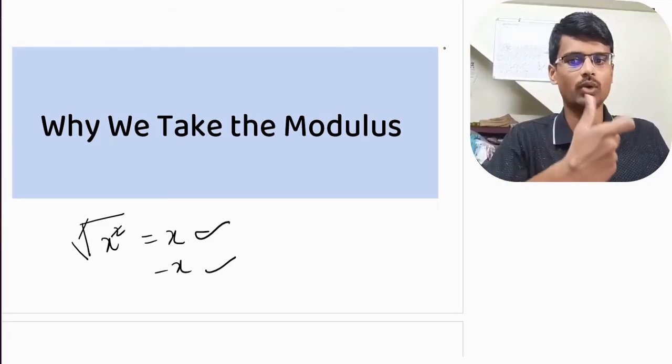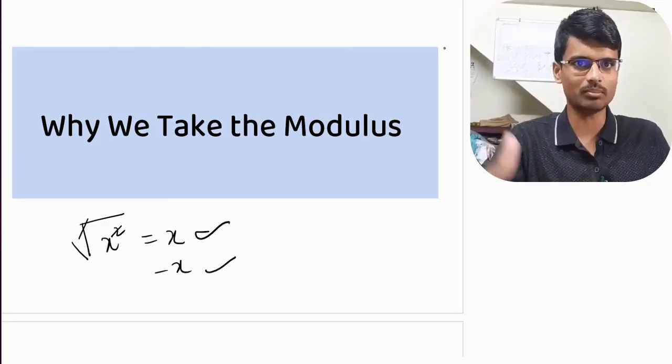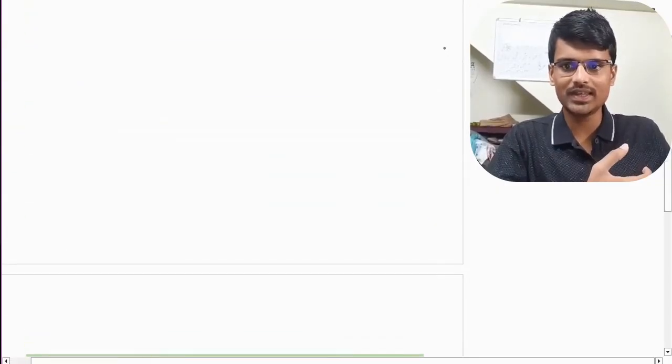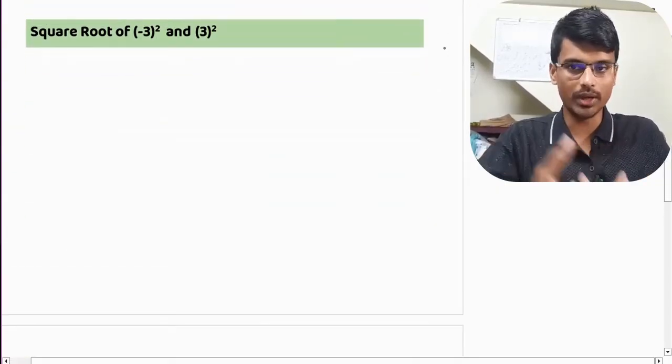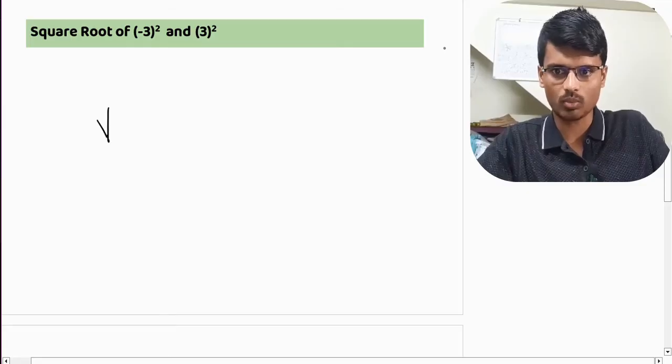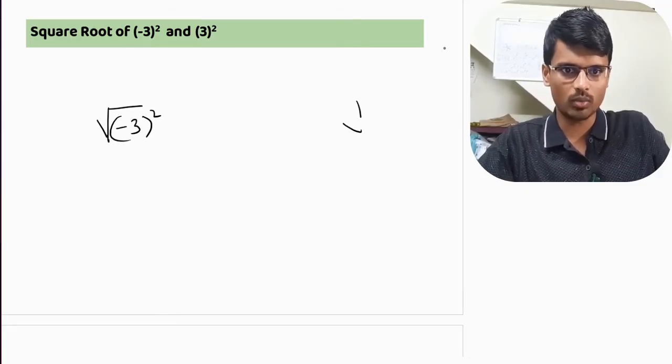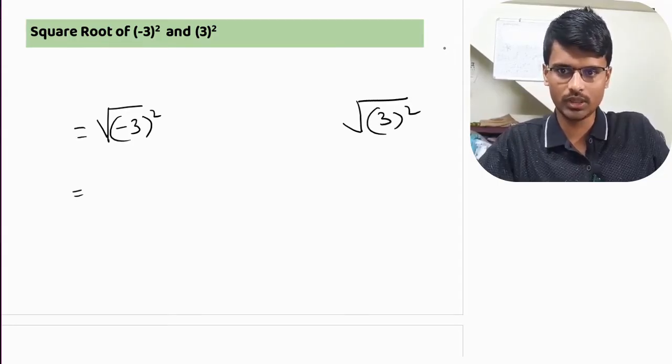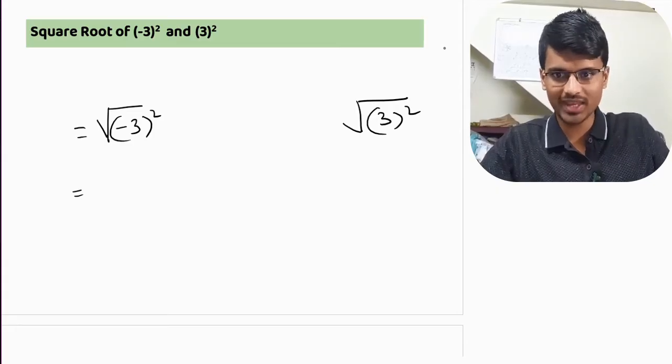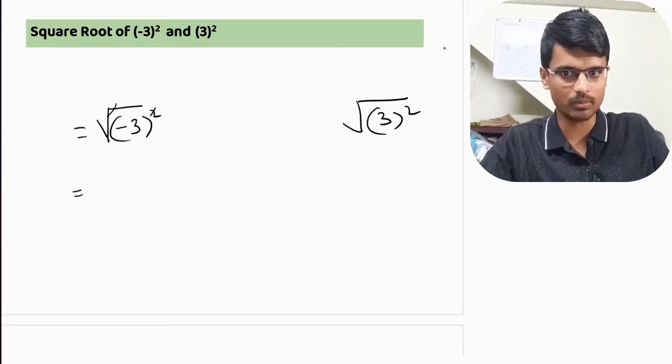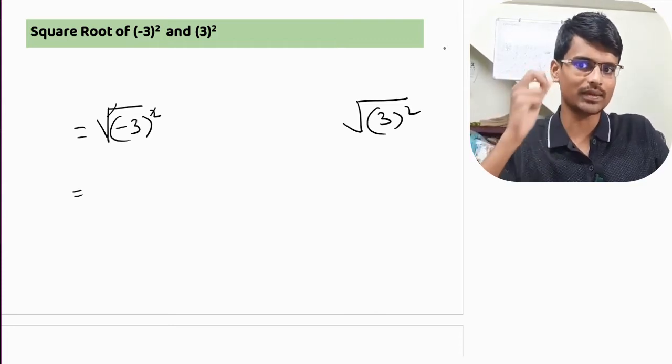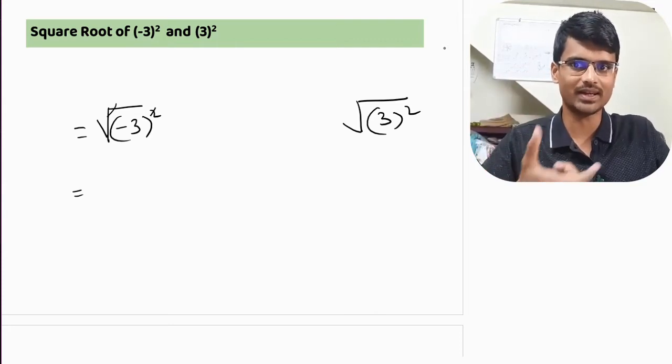We will be trying to understand the reason behind this and the maths that is happening. Let us take a very easy example before we go into it. Let us take two examples: square root of minus three whole square and square root of three square. If we cancel the root and square, we will get minus three. But is it correct?